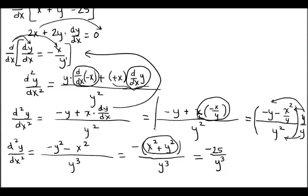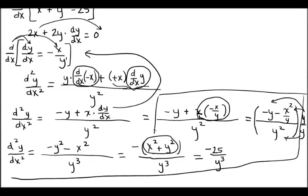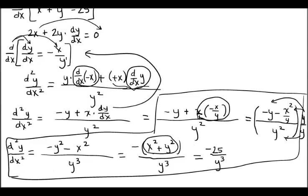Looking back at the original problem, x squared plus y squared equals 25, so a really simplified answer would be negative 25 over y cubed. Anything from here on down would be considered the correct calculus answer. If it's multiple choice and only the simplified form is listed, you would need to travel through all of this to get there. This has been some examples with implicit differentiation, and I hope it's helped with any questions you might have had. We'll address them in class — see you soon.